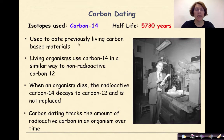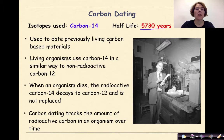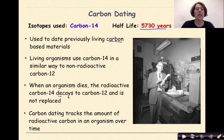Carbon dating: the isotope used in carbon dating is radioactive carbon-14, and its half-life is 5,730 years. It's used to date previously living carbon-based materials. Living organisms use carbon-14 in a similar way to non-radioactive carbon-12. When an organism dies, the radioactive carbon-14 decays to carbon-12 and is not replaced. Carbon dating tracks the amount of radioactive carbon in an organism over time.